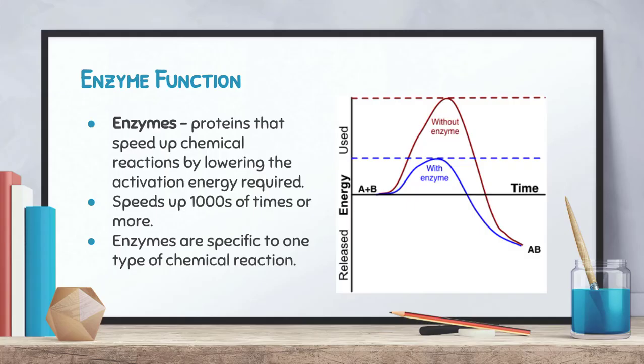Activation energy is a bit of a problem because inside the body, energy can be difficult to obtain. So the body uses what are called enzymes. Enzymes are proteins — that's the special question for the day, so make sure you write that down. Enzymes are proteins that speed up chemical reactions by lowering the amount of activation energy required. If less energy is required to start a reaction, that reaction will happen much faster and occur much more often — it can speed up thousands of times or more. Enzymes are also very specific: one specific enzyme is used for one type of chemical reaction, but those enzymes can be reused over and over again.